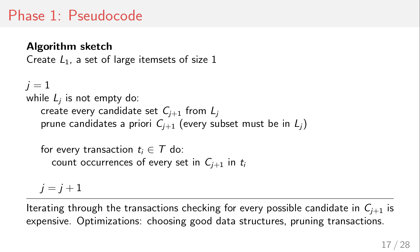Here's a sketch of the algorithm: you create large item sets of size one, then as long as you have item sets, you create candidate sets one size larger, prune those candidates, and go over every transaction to count occurrences — checking how many times each candidate appears as a subset in the transactions. This inner loop over all transactions is where the runtime is high. If you have 100,000 transactions, you'll loop through them many times, so you really want to minimize this cost by pruning candidates cleverly.